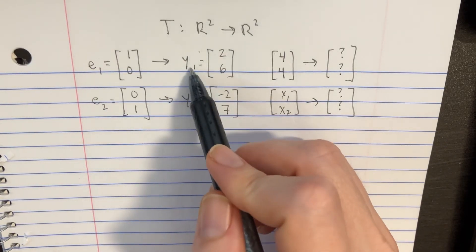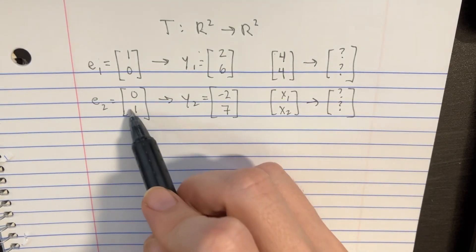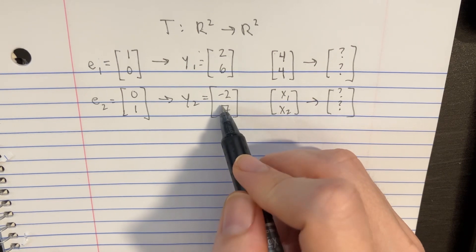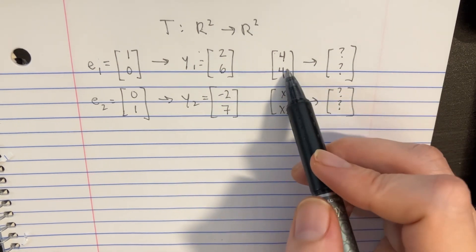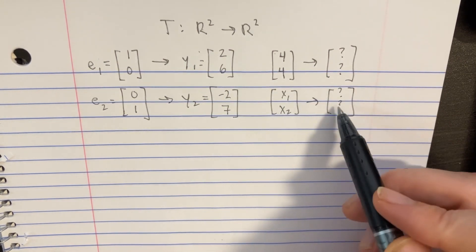If we know that E1 gets transformed into Y1, and E2 gets transformed into Y2, then we're asked to figure out what the images are of this vector and this vector.